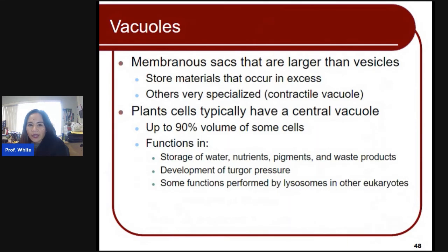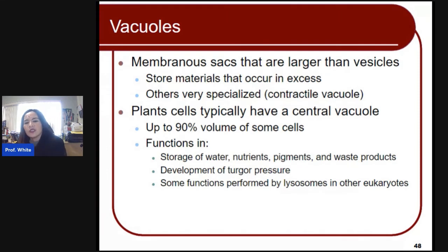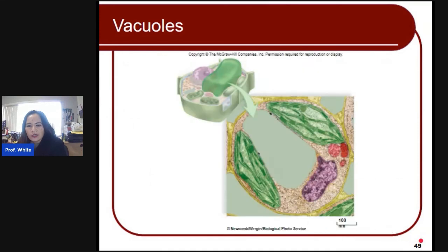Vacuoles are normally found in plants. They are membranous sacs that are larger than vesicles and store materials that occur in excess. Some are specialized contractile vacuoles. Plant cells typically have a central vacuole, which can be up to 90% of the volume of some cells. It functions as storage for water, nutrients, pigments, and waste products, and develops turgor pressure — kind of like a big blob of water inside the cell. Some functions performed by lysosomes in other eukaryotes are similar to vacuoles.